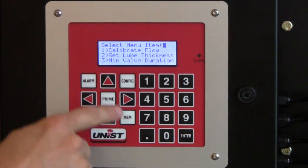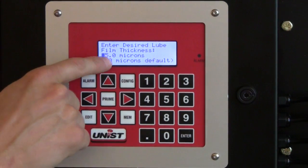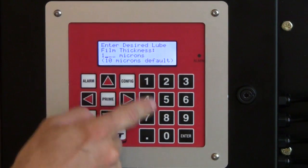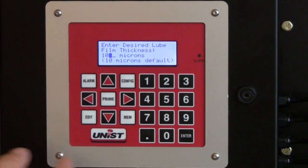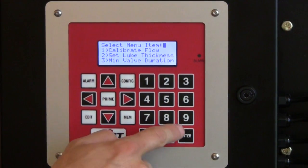Number three is configure auto setup and option two here is set your lube thickness. So if we go to there and let's say we want to apply 10 microns of fluid evenly across the top and the bottom of the coil, we go and program that in. And now that's set.